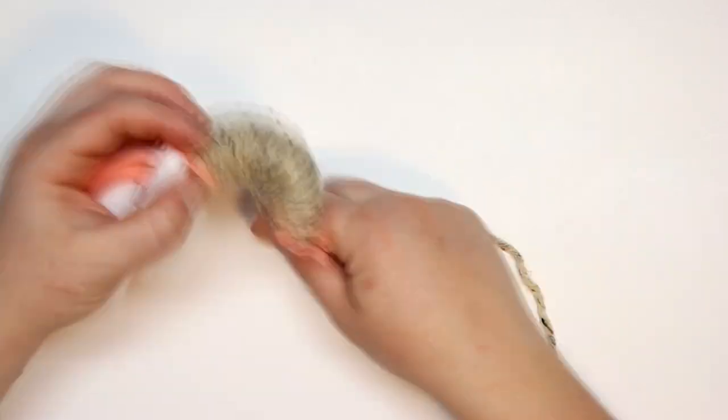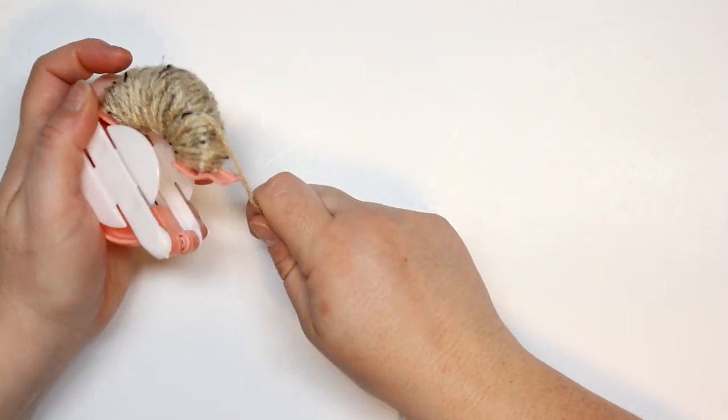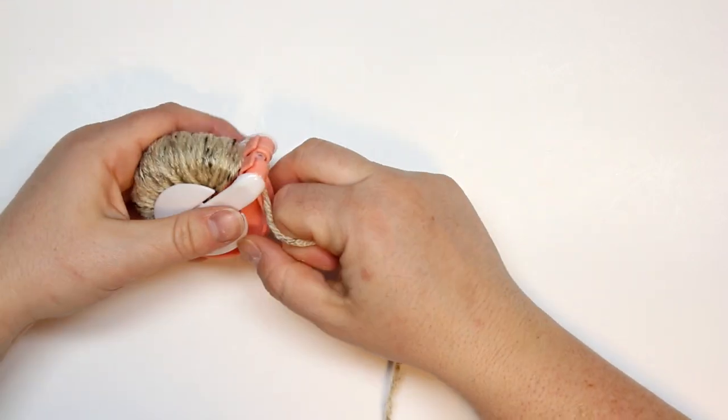I noticed that you're not gonna want to do it too much because you have to close the two arms and it's gonna go in between these two white pieces there. So you just want to make sure that it is not so much that it won't fit to be able to close it.